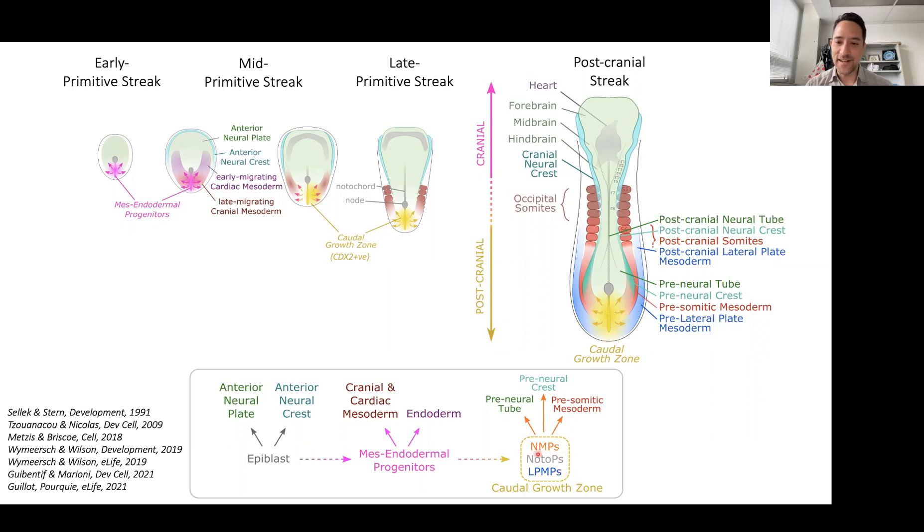that might derive midline structures such as the notochord or lateral structures in the lateral plate mesoderm. But the progenitor pool that I have been focused on in my postdoc in the Hedlund laboratory have been this pool called neuromusodermal progenitors. They're called neuromusodermal progenitors because they derive both neural tissue and the somitic tissue.